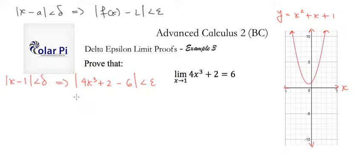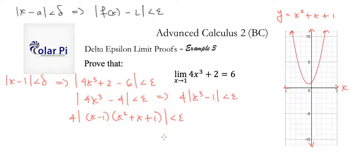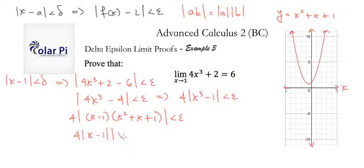To start, we could rewrite this slightly shorter. Next, we factor out the 4 and write 4 times absolute value of x cubed minus 1 is less than epsilon. Now we can use the fact that x cubed minus 1 equals x minus 1 times x squared plus x plus 1 — difference of cubes factoring. And we know that absolute value of a times b equals absolute value of a times absolute value of b.